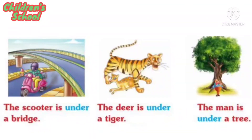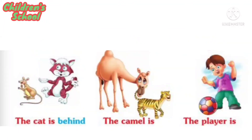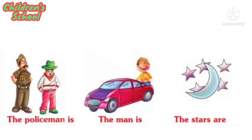The scooter is under a bridge. The deer is under a tiger. The man is under a tree. The cup is under a table. The snake is under a table. The man is under a car. The cat is under a cat. The camel is under a tiger. The player is under a ball. The policeman is under a criminal. The man is under a car. The stars are under a moon.